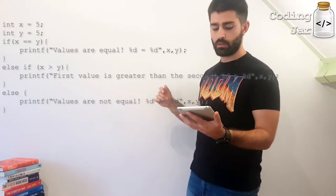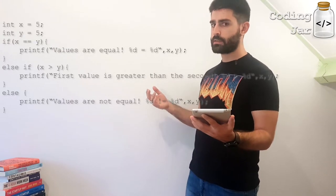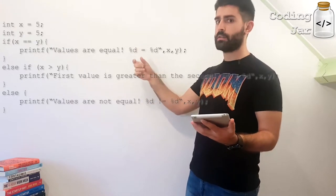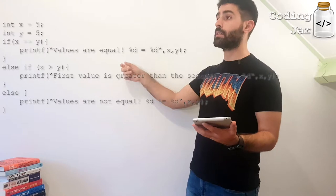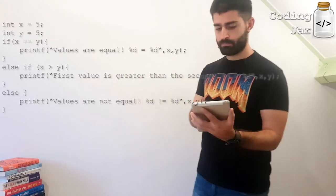And actually it should denote that y is greater than x, because if it's not equal, and if they're not equal, and if x is not greater, then y is greater than x. And that's how the if, if else, if else statements work. I guess that's pretty easy.